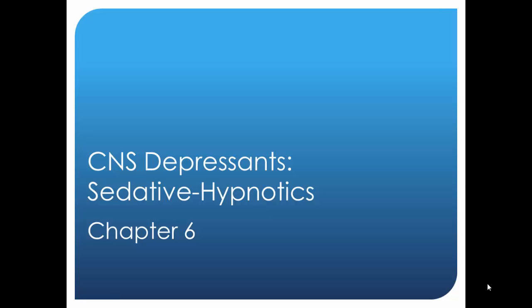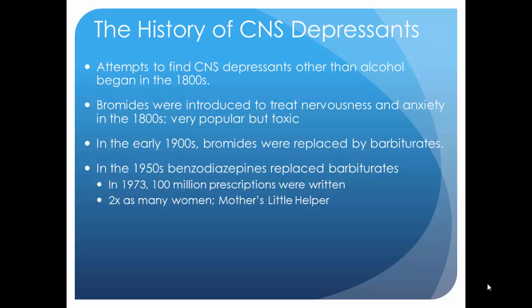In this module we'll talk about sedatives and hypnotics, which are CNS depressants. For a long time alcohol was the main depressant, and in the 1800s we started looking for other depressants and came across bromides. Bromides were very popular, but we did not know at the time how toxic they were. We'll see as we go through the course that many substances we believe to be safe and effective we later find out are not safe.